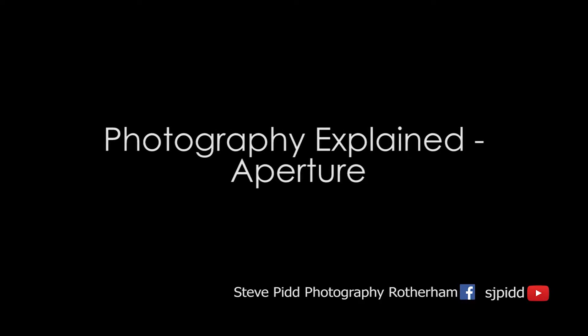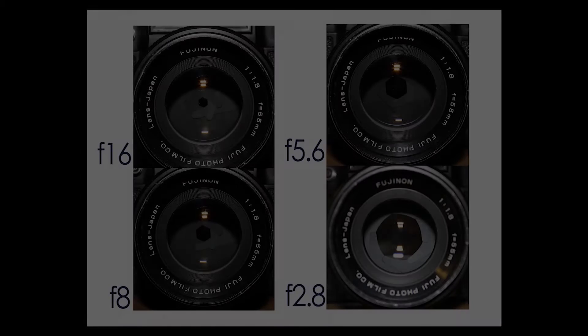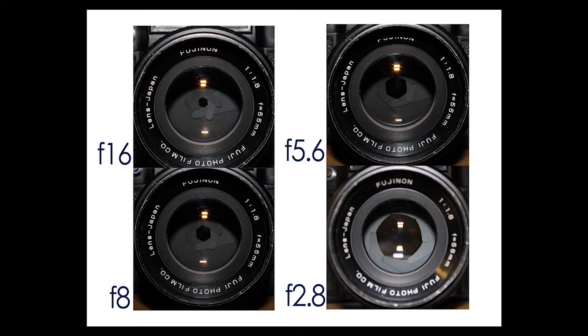Aperture is how large the iris is on the camera. A smaller number means a larger opening, which in turn means more light hitting the film or sensor. As the opening becomes smaller the number will increase, however this is because it is measured as a fraction.